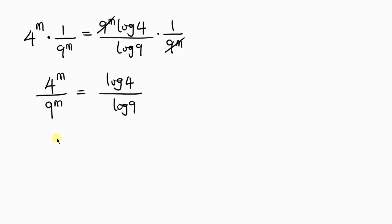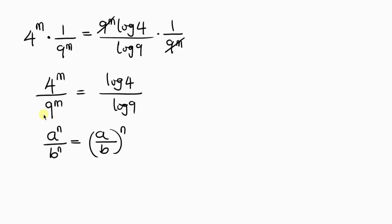Our next step will be to apply the law of indices that says a to the m all over b to the m is the same as a over b all raised to the common exponent m. Applying this to the left hand side, we have 4 over 9 all raised to the common exponent m, equal to log 4 over log 9.